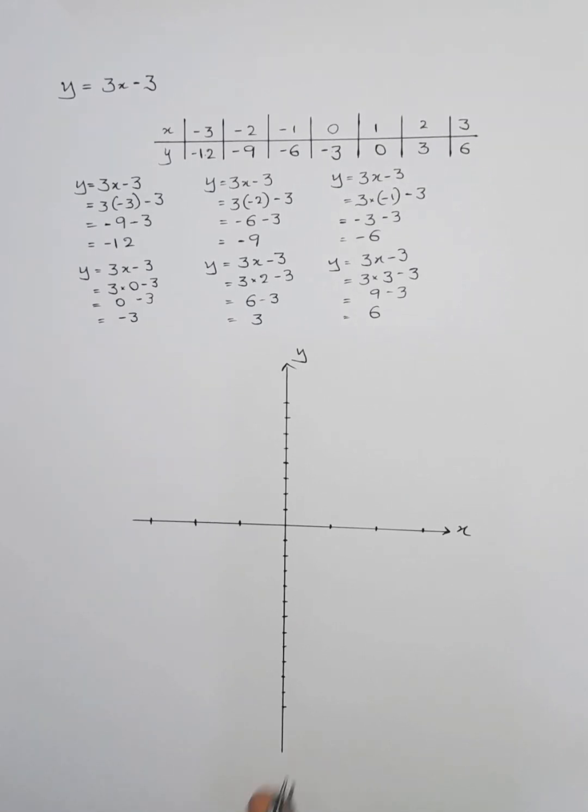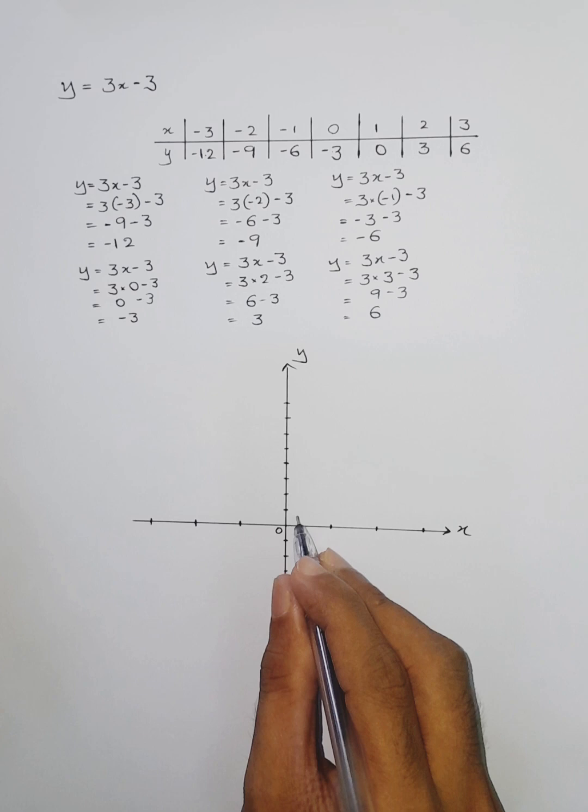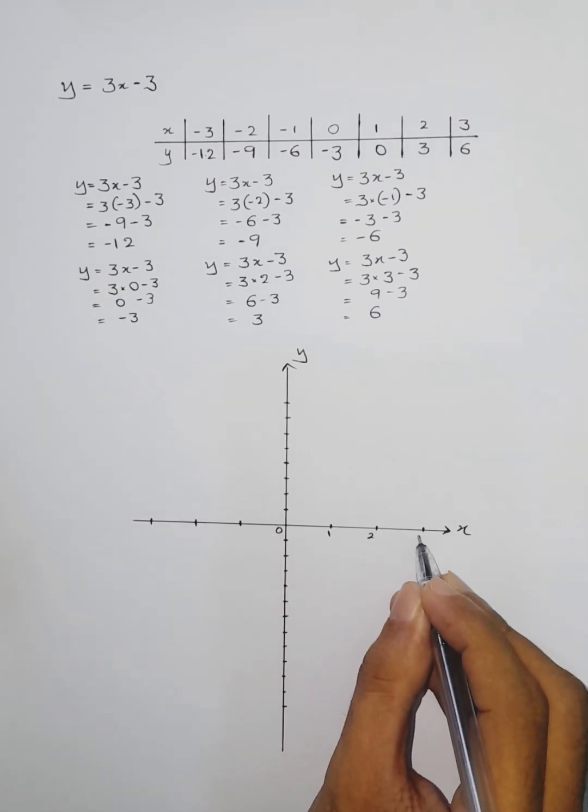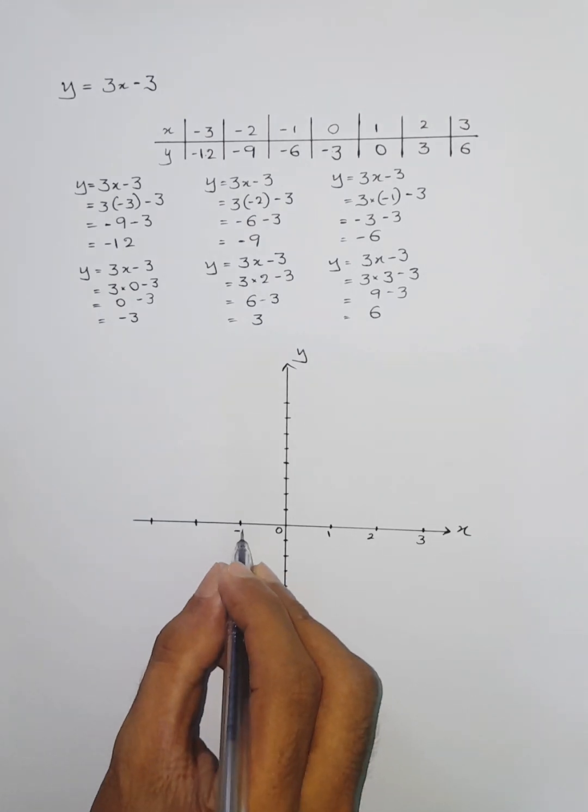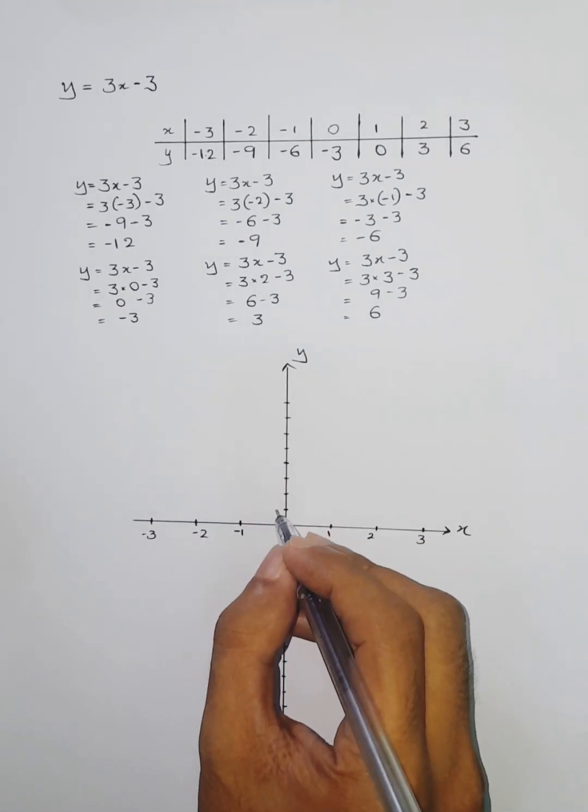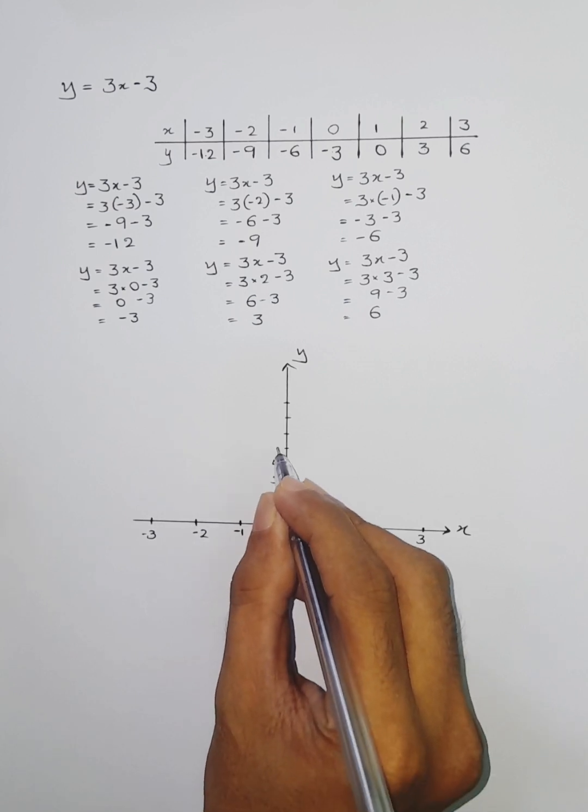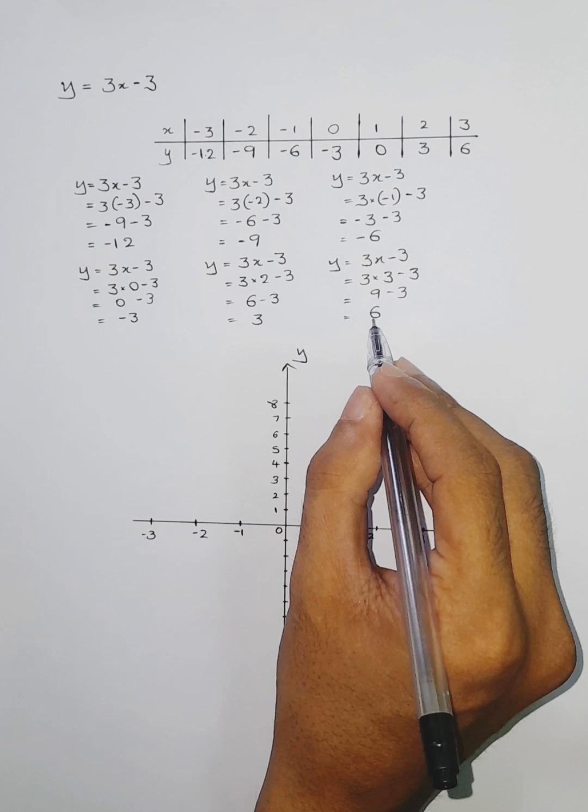Here we have marked the axes. 0 you have to place at this third quadrant. 1, 2, 3, 1, 2, 3. For x we are having -3 to +3, you know. So here -1, -2, -3.